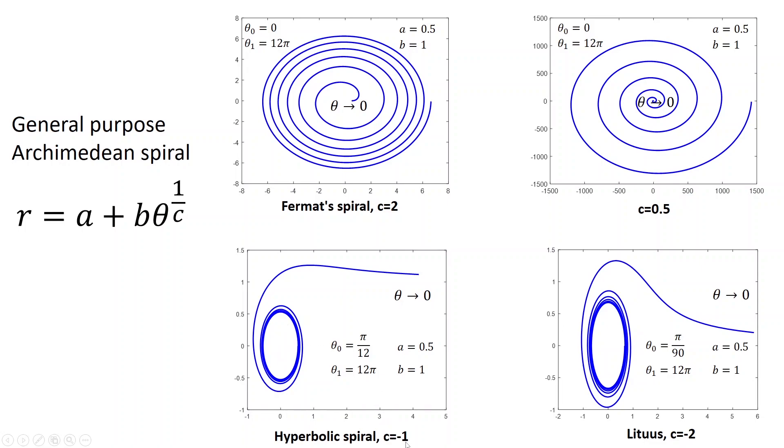So, for example, in this case, c is minus 1. In such situation, this is hyperbolic spiral. It starts from this asymptotic value, which is equal to b.